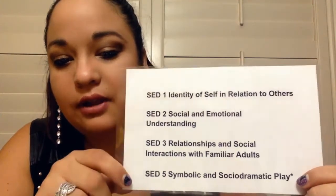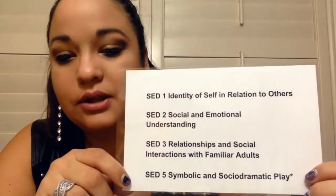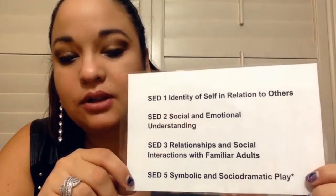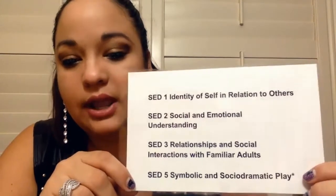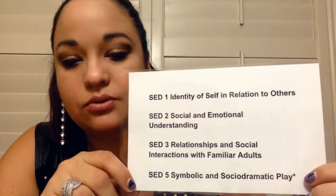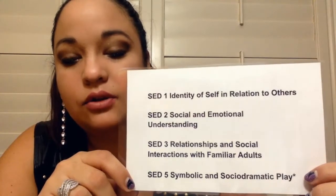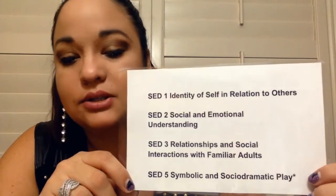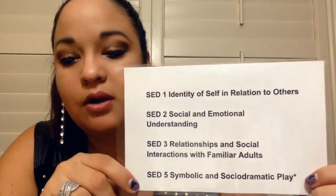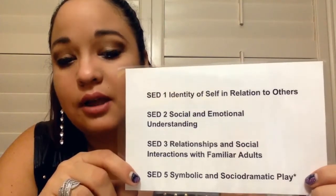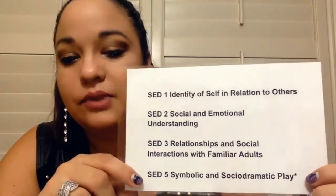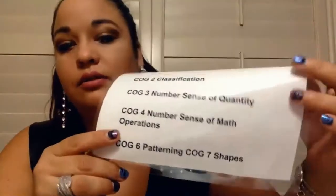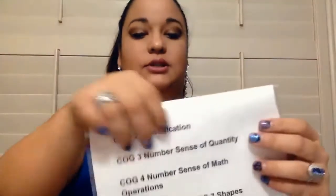Number five, social-emotional development five, is symbolic and social dramatic play. This is linked to the other video about learning through play — children using their imagination to create certain play within their environment, within the materials and toys that they have around them. The goal is asking whether your child is able to do those things.